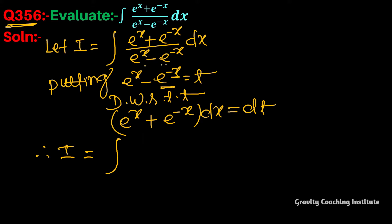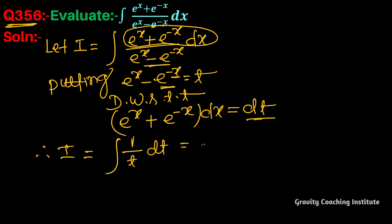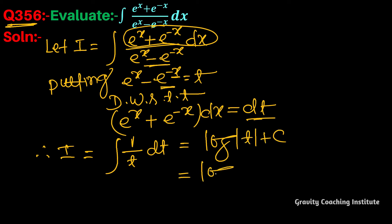This is equal to log mod t plus C. Now substituting back the value of t, the answer is log mod (e to the power x minus e to the power minus x) plus C.